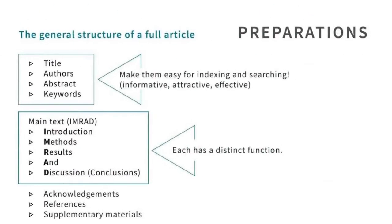Let's have a look at this slide. This is the most important slide that you will see in this presentation today. This slide summarizes the overall structure of academic articles. You have two sections in an academic paper: the title, the abstract, and the keywords — that's the first section. The second section is the rest of the paper, the IMRAD structure. That's the basic structure of academic paper writing — two different sections.